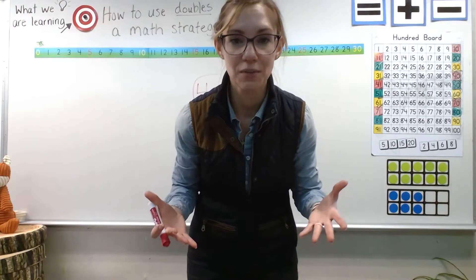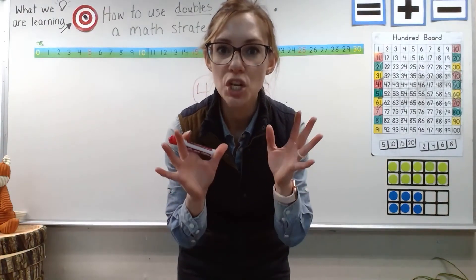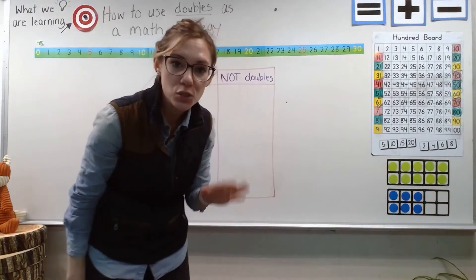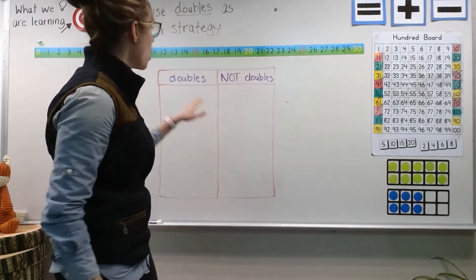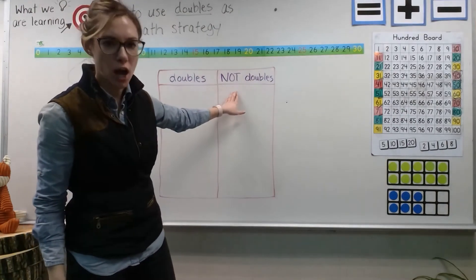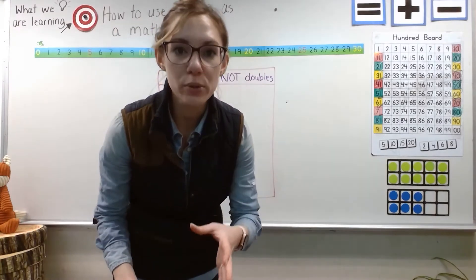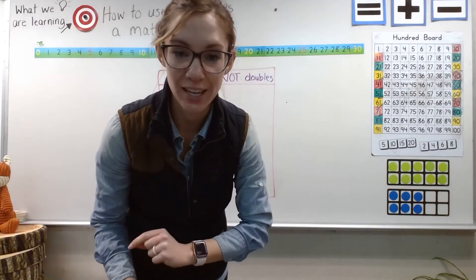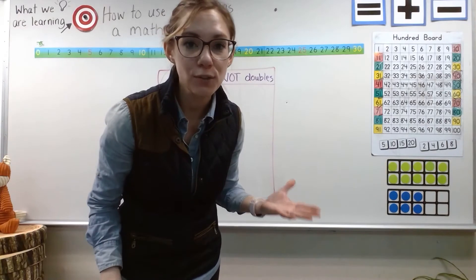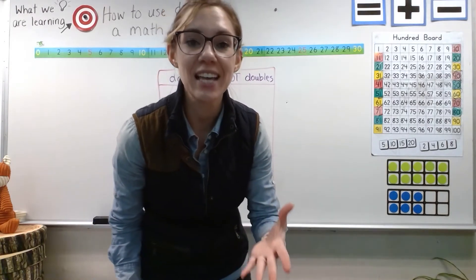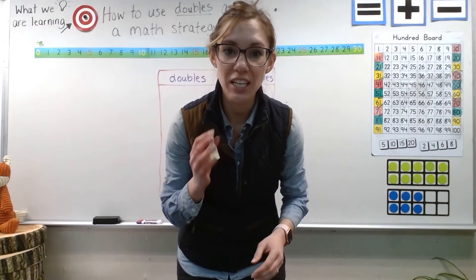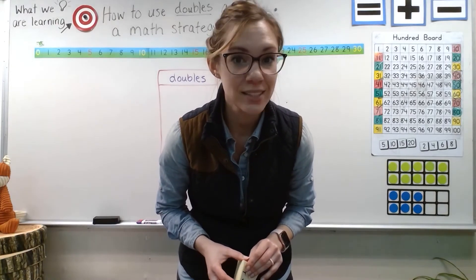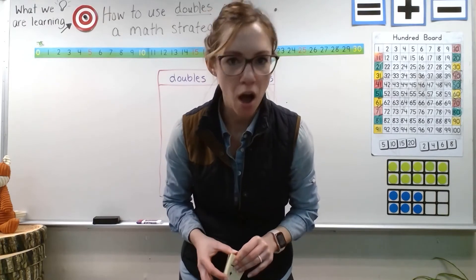All right, now we're going to do a little activity and practice figuring out which number sentences are doubles. I've made a chart up here on our board to help us sort out which number sentences are doubles and which are not doubles. Remember, a doubles fact is when you have one number and you add itself — just like we had four plus four, five plus five, six plus six. So I have some sticky notes with number sentences on them. I want you to look at the number sentence and tell me: is it a doubles fact or is it not a doubles fact?